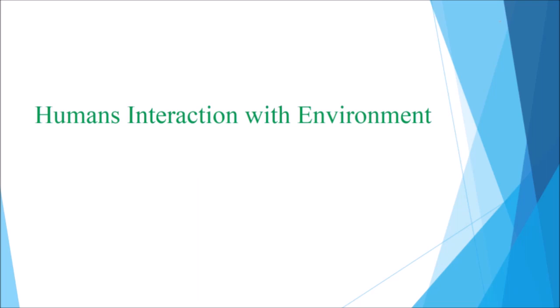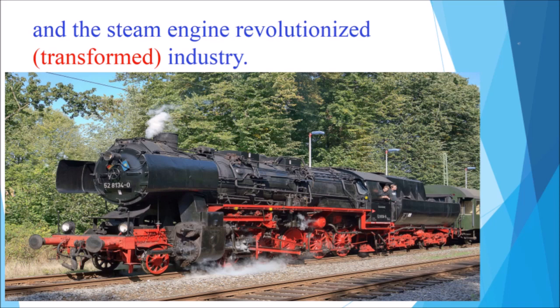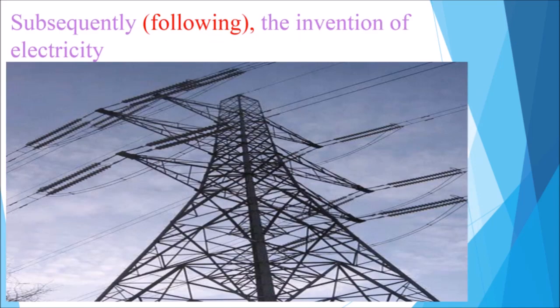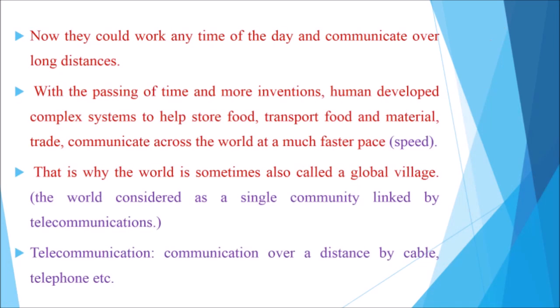The invention of the wheel and the steam engine revolutionized — meaning transformed — industry. Subsequently, the invention of electricity and radio transformed the way people worked. Now they could work any time of the day and communicate over long distances. With more inventions, humans developed complex systems to store food, transport materials, trade, and communicate across the world at a much faster pace.